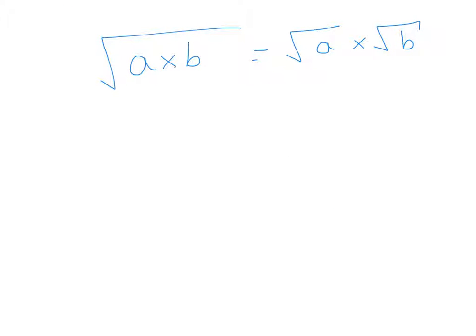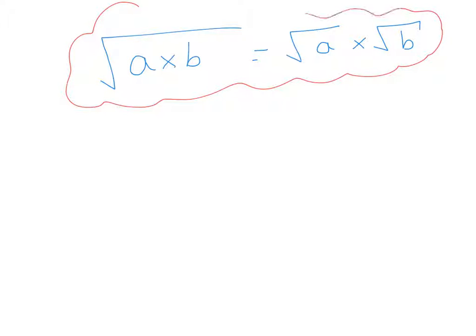The first property we need to consider is this: surds always focus on things under a square root. If inside a surd we can write something as something times something else, we can split the square root into two separate square roots. For example, if this was 2 times 5, we could split it into the square root of 2 times the square root of 5.